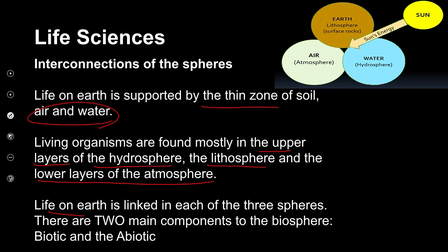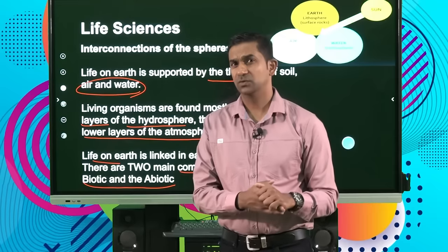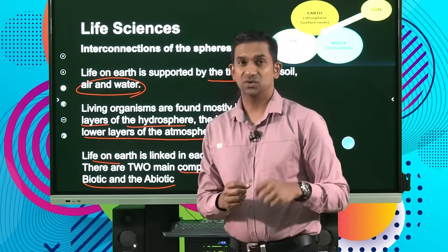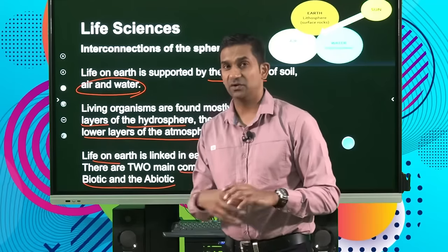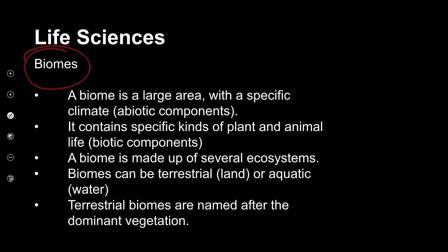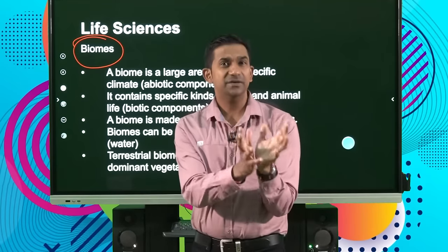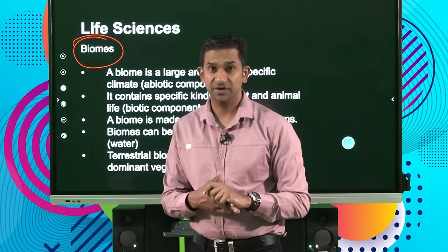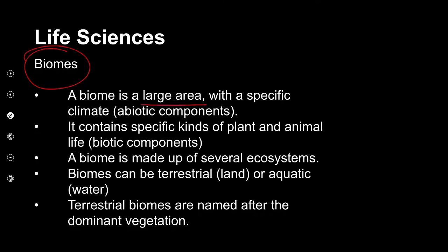Life on earth is linked to each other and the three spheres. There are two main components in a biosphere that we need to recognize: the biotic and the abiotic components. When we look at life forms existing on earth, there is an interconnectedness between the three components, but there is also an interdependence between the living components and the non-living components, which we refer to as the abiotic factors. A biome is a large area with a specific climate, and these would be influenced by the abiotic components — things such as climate, temperature, altitude, rainfall.